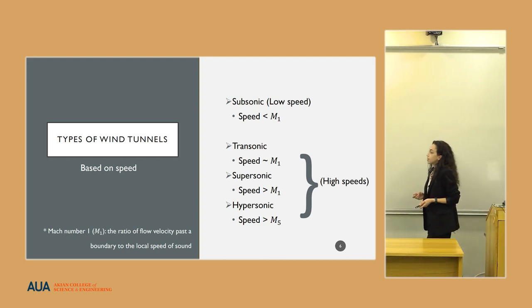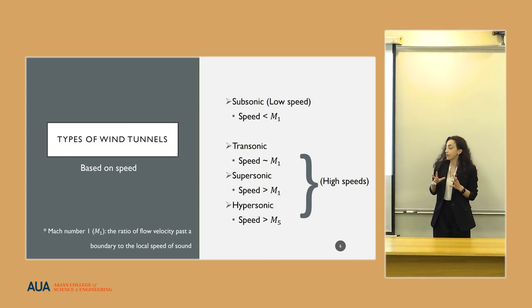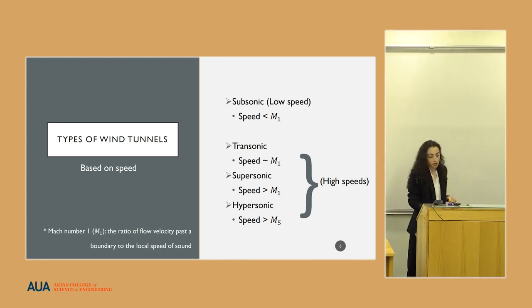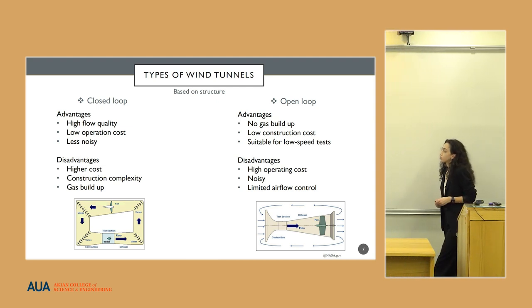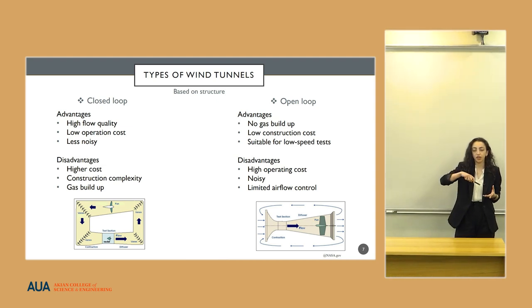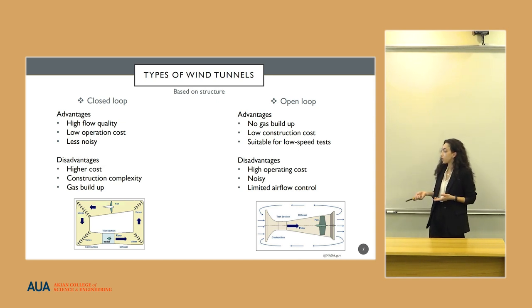There are many types, there are two main ways to categorize wind tunnels. The first one is based on the speed, the airflow speed in the wind tunnel, which is compared to the Mach number. Correspondingly, there are subsonic, transonic, supersonic, and hypersonic wind tunnels. Another way to categorize wind tunnels is based on their structure, whether the airflow is circulating in the wind tunnel or not.